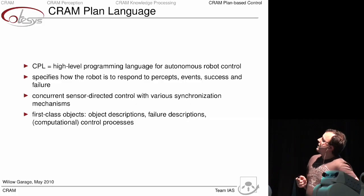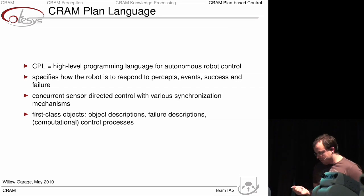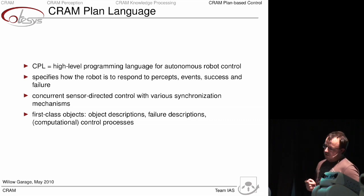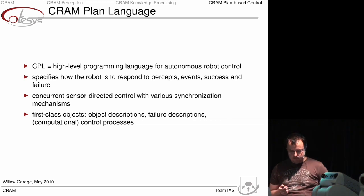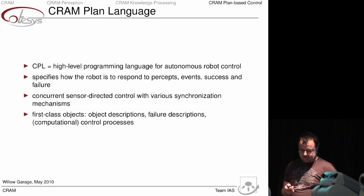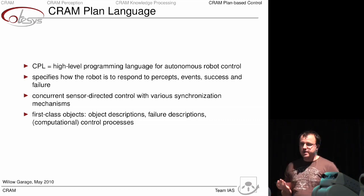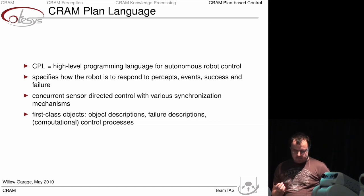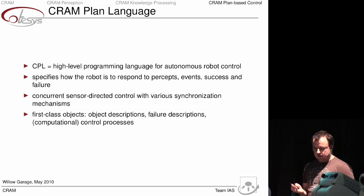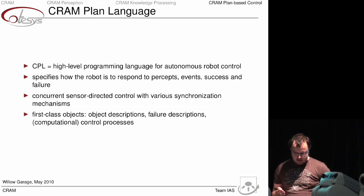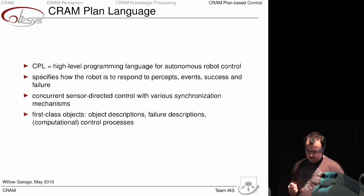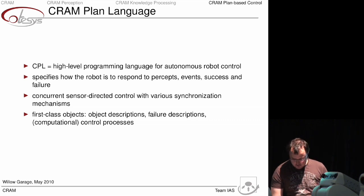The central component of the whole proposal is what our colleague Lawrence develops — the CRAM plan language, a high-level programming language for autonomous robot control. It specifies how the robot reacts to different percepts, events, successes, and failures. It can do this reactively and concurrently, and it can deal with structures such as object descriptions, failure descriptions, and control processes.